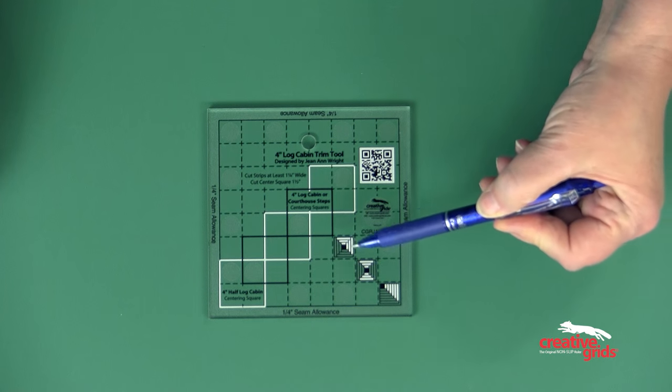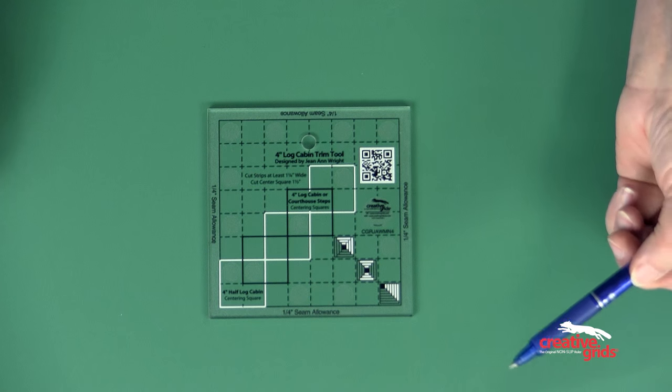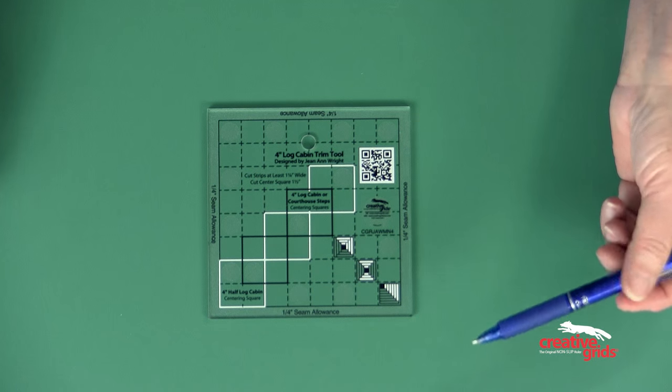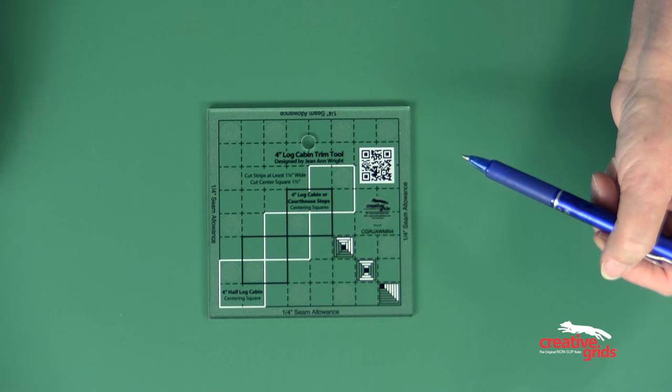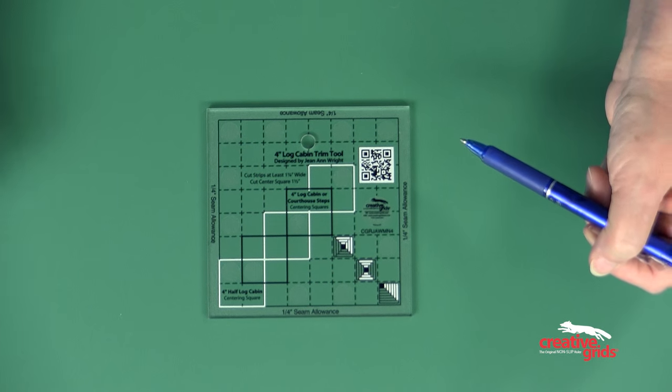There are also icons on the ruler showing three different versions of a log cabin block. All of those can be sewn with the same tool. Now I'm going to show you how it works.